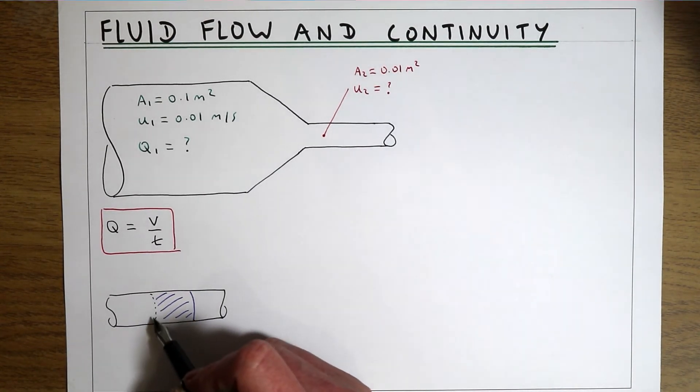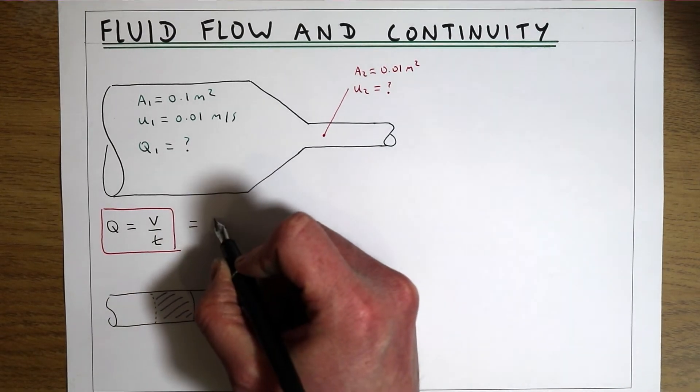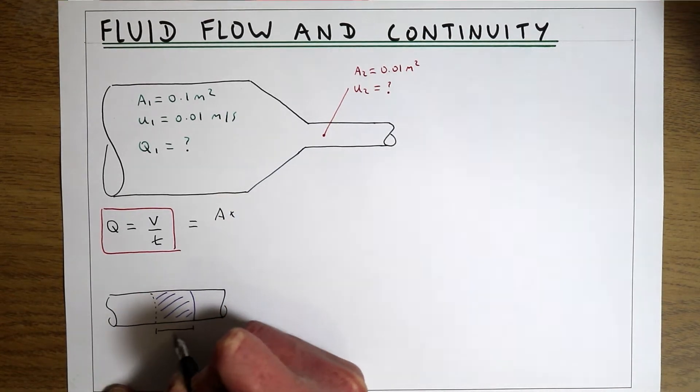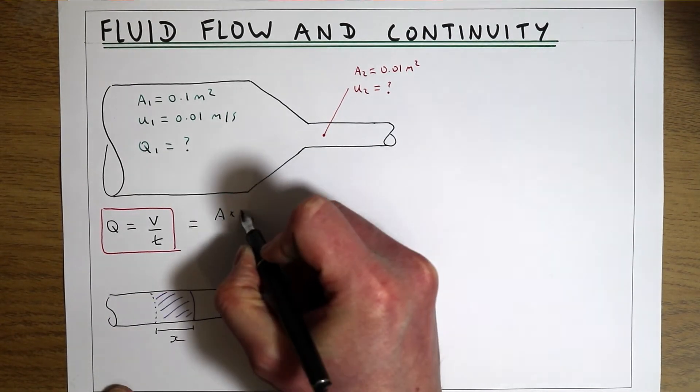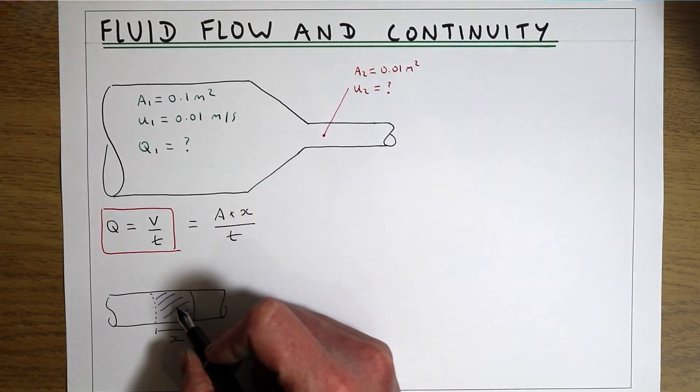The volume of fluid that's gone past that point in a certain period of time is going to be the area of the pipe times the length of the volume that's gone through, divided by the time it's taken for that volume to go through.